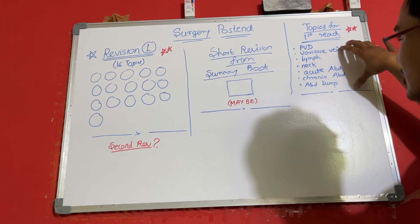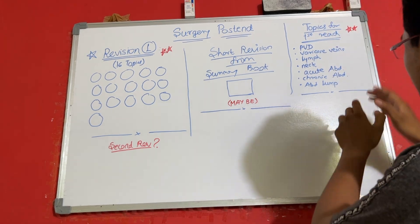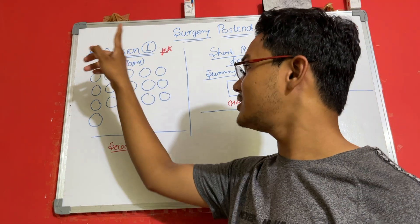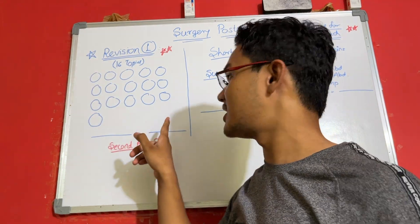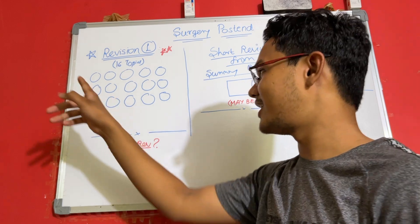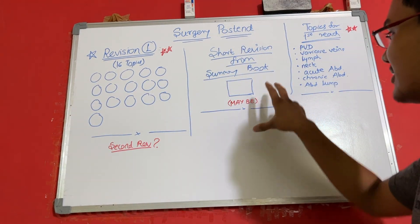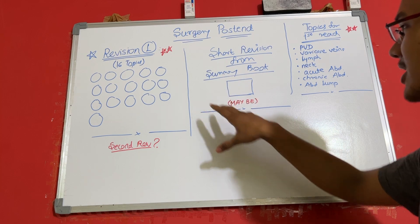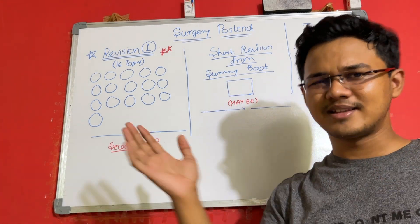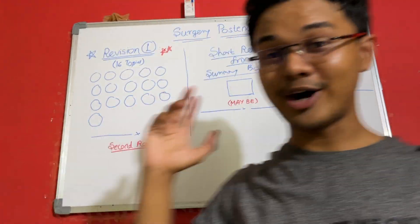First of all, there are topics that I have never read from the book, so the first reading is compulsory — that's why it has two stars, the highest priority. Second is the revision of all the important topics from Asdas. Each bubble denotes a chapter and I need to tick all these bubbles by tomorrow. Lastly, the summary book is a maybe — I am still confused about doing it tomorrow.